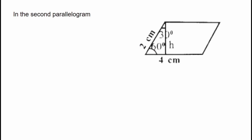Now let's take the second parallelogram. The angle of the form is 90 degrees and the other angle is 30 degrees, giving us a 30-60-90 triangle. The ratio of sides in a 30-60-90 triangle is 1 to √3 to 2. We use this ratio to find the height of the parallelogram.